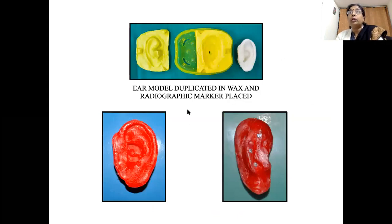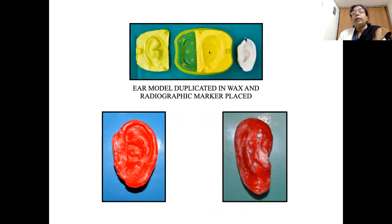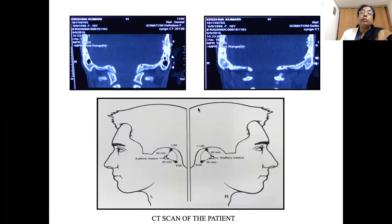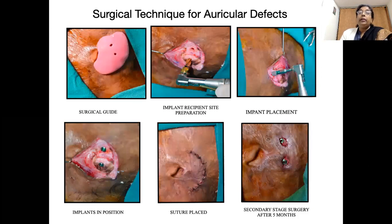When the patient reports, we take photographs, and with those photographs or CT data we can make a positive model and mirror the opposite ear, or take an ear from an ear bank, then do 3D printing for that ear. This can be converted into wax, where we place tin foil or gutta-percha as radiopaque markers. We then ask the patient for a CT scan, where we evaluate the amount of bone available in relation to the radiographic markers and adjust implant positions as required. The same template can then be converted into a surgical template.